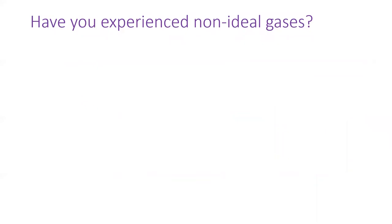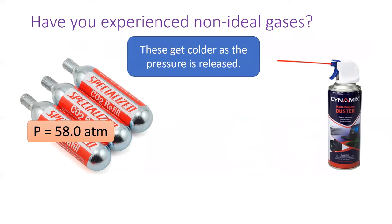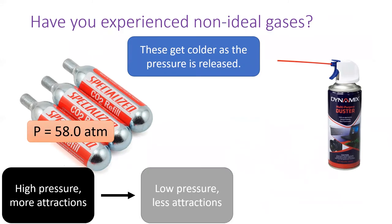Have you ever experienced non-ideal gas behavior? Well, if you've ever used a sample of compressed gas in which the pressure can be as high as 58 atmospheres, you may have noticed that these products get colder during use. That behavior does not make sense for ideal gases not interacting with each other. But if we remember that real gases stick to each other, especially at high pressure, this behavior can be explained by simple thermodynamics.